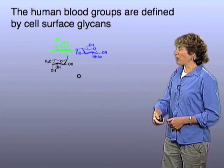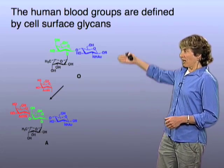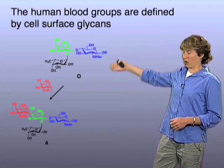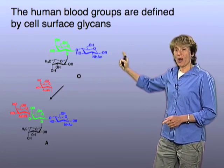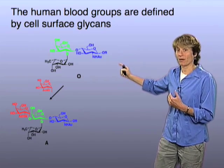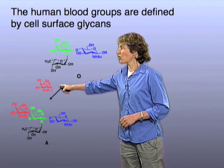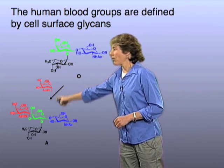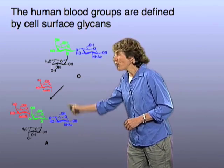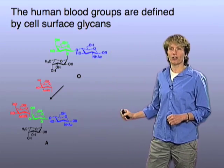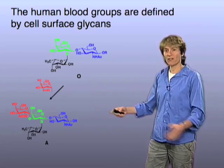Some of you are blood type A. What that means is that you also have this sugar biosynthesized in your cells, but you have an enzyme that I don't have. That enzyme transfers a new sugar onto the trisaccharide to build a tetrasaccharide. And if you have this particular tetrasaccharide on your blood cells, you are blood type A, by definition.